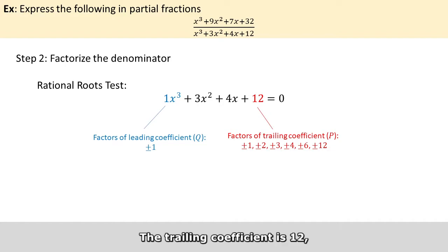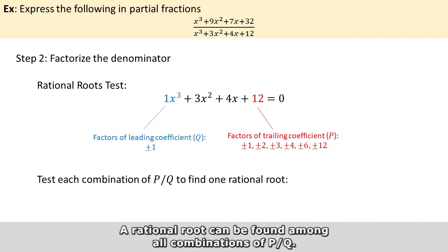And the trailing coefficient is 12, so it does have more factors as shown. We denote these factors by p. A rational root can be found among all combinations of p over q.